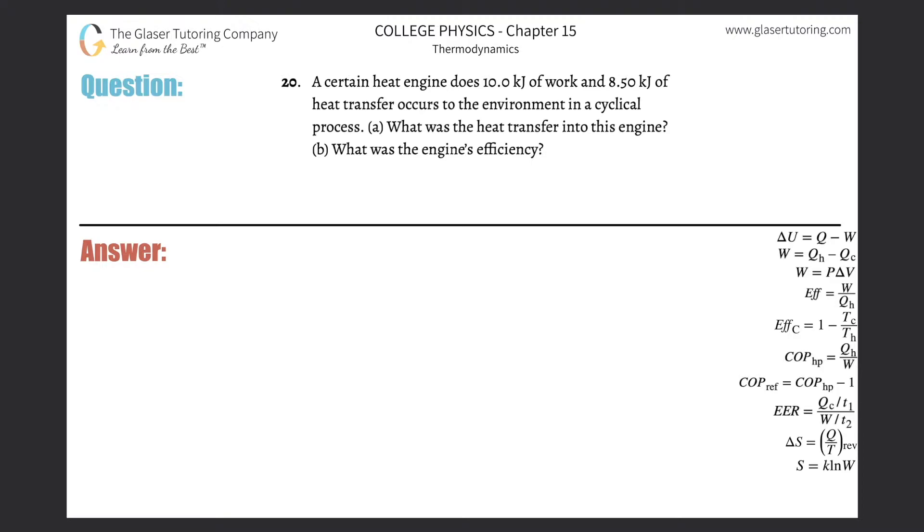Number 20. A certain heat engine does 10 kilojoules of work and 8.5 kilojoules of heat transfer occurs to the environment in a cyclical process. What was the heat transfer into this engine?